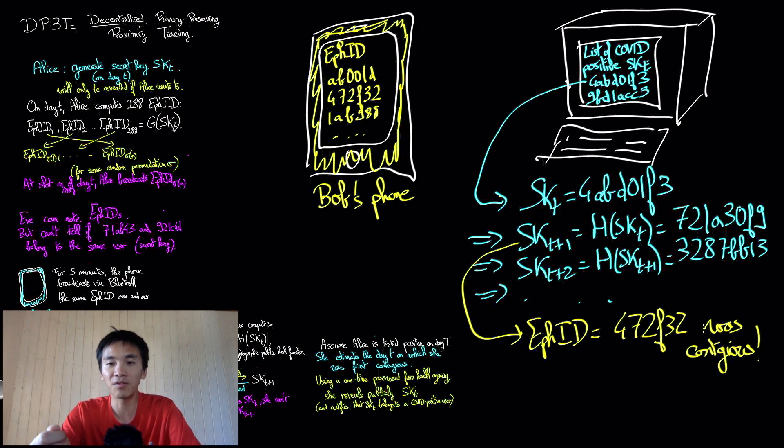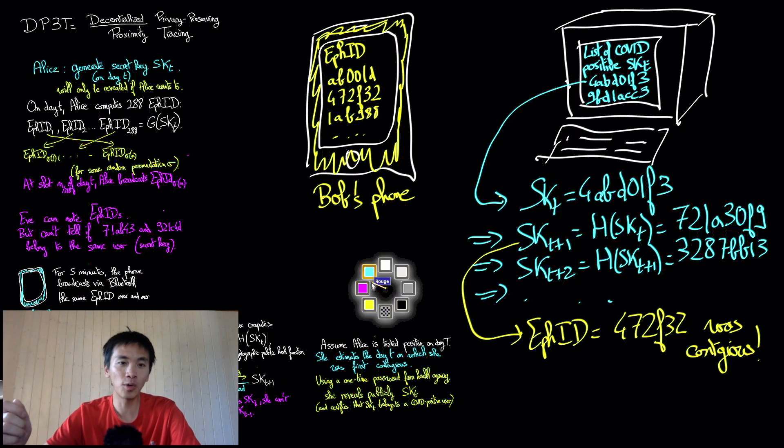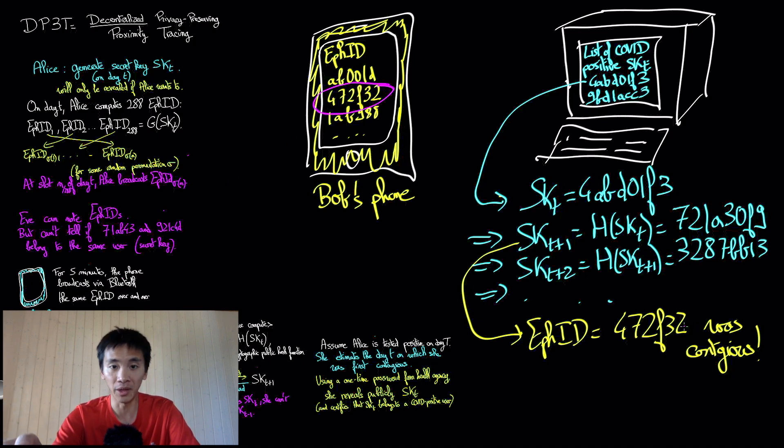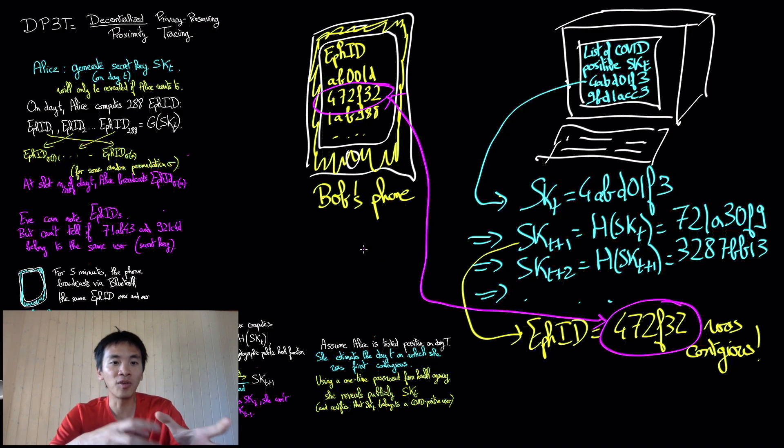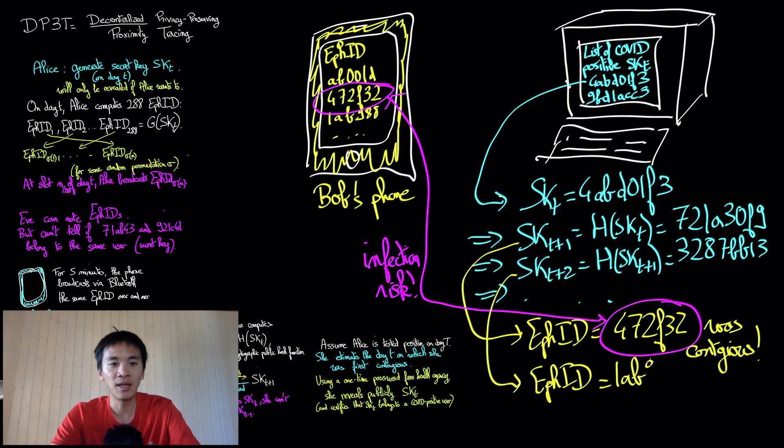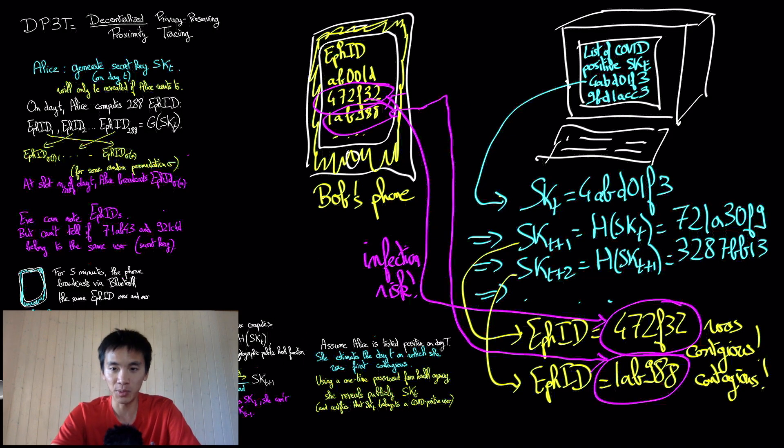This yields a list of contagious ephemeral identifiers. Bob can then compare the list of contagious ephemeral identifiers with the list of ephemeral identifiers he entered in contact with. The intersection of the two lists then yields the set of contagious ephemeral identifiers Bob was exposed to. If such contacts are too numerous, lasted too long, and were in too close proximity, then Bob may be at risk. Bob will then receive an alert, automatically triggered by his phone, that says so.